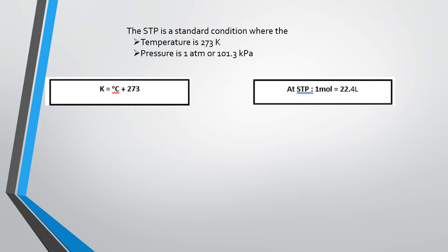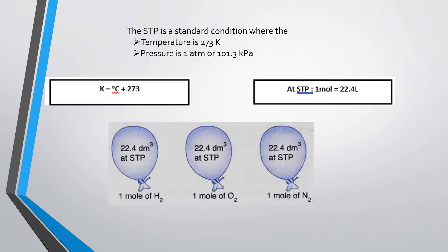At STP condition, one mole of a particular gas will always have a volume of 22.4 liters. For example, one mole of hydrogen gas is 2 grams — because mole equals mass divided by molar mass (MR), and the MR of H₂ is 2. So 2 grams divided by 2 gives one mole, and 2 grams of hydrogen gas will occupy 22.4 liters (same as decimeter cubed) at STP. Similarly, 32 grams of oxygen and 28 grams of nitrogen will each take up 22.4 liters at STP. This volume is applicable only at STP conditions.